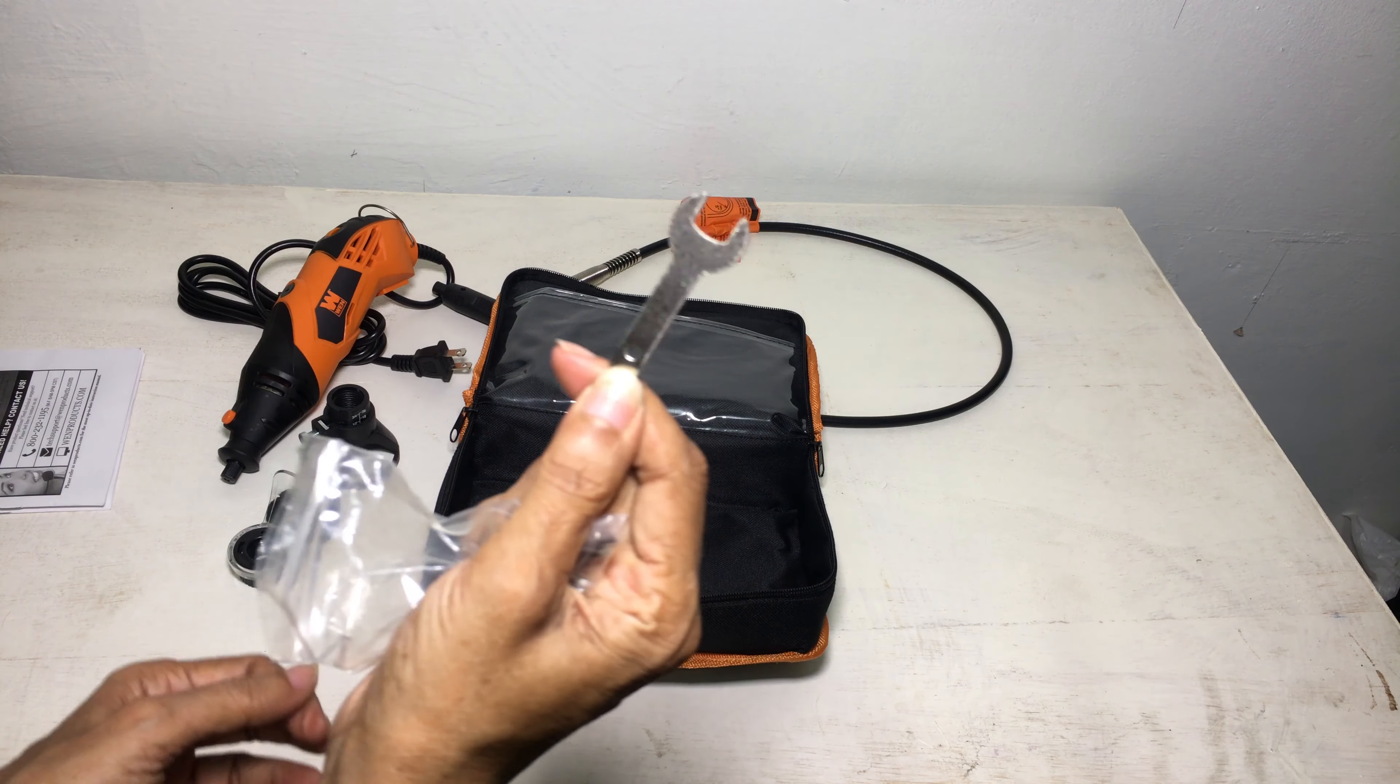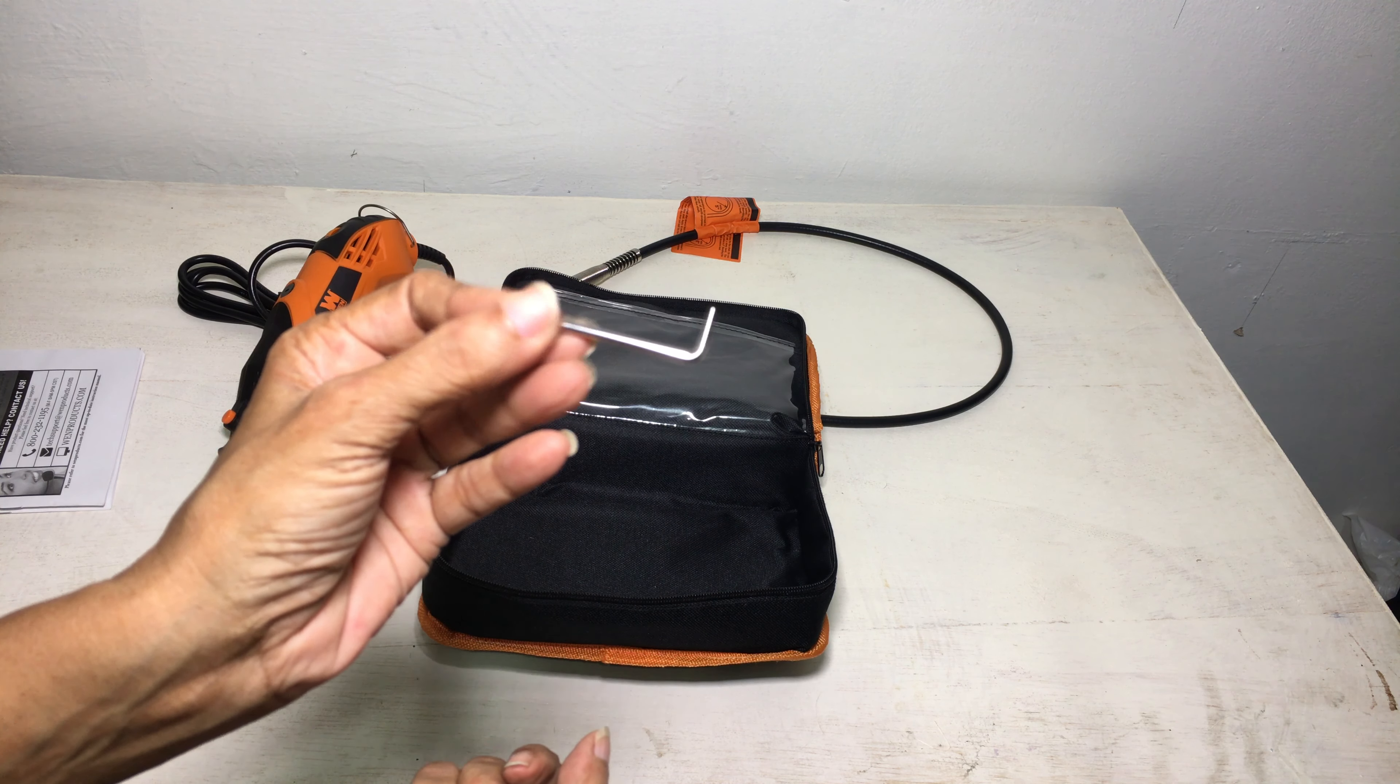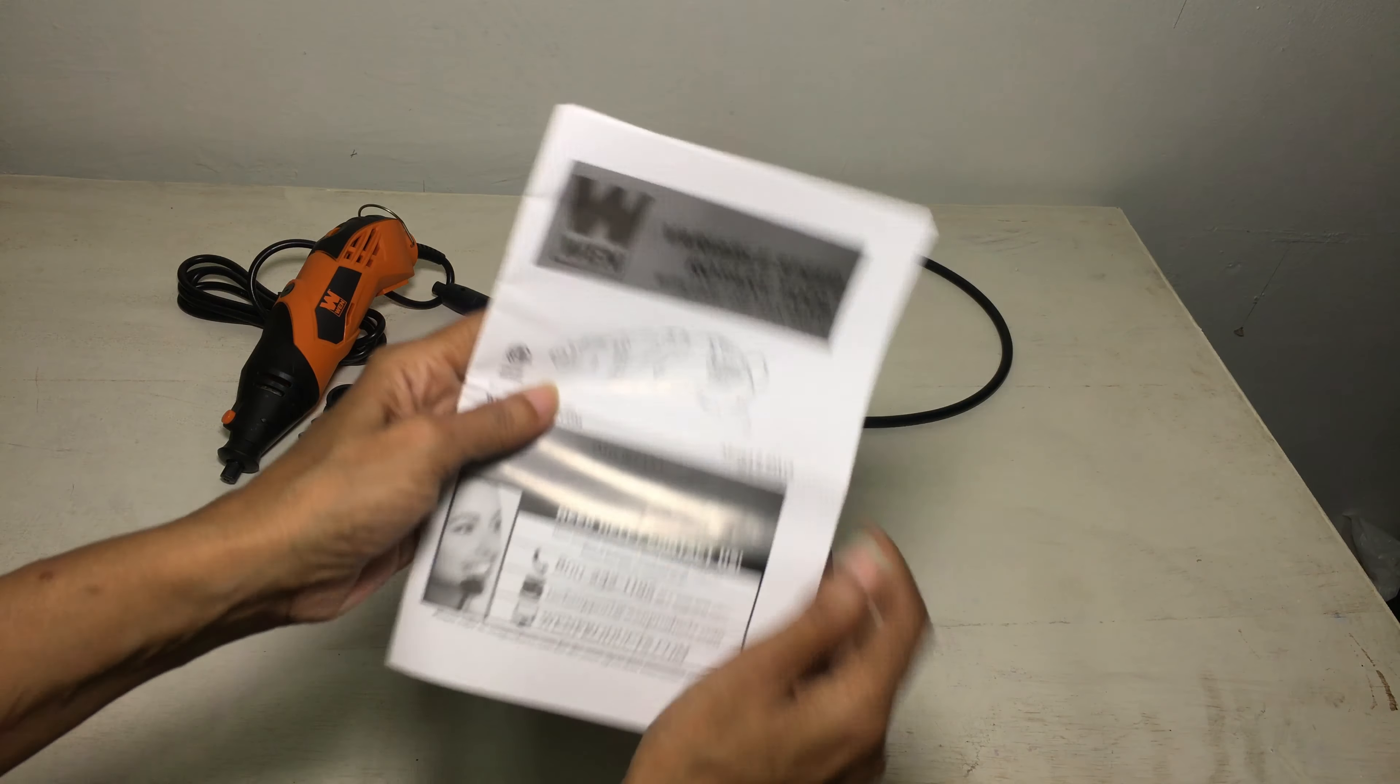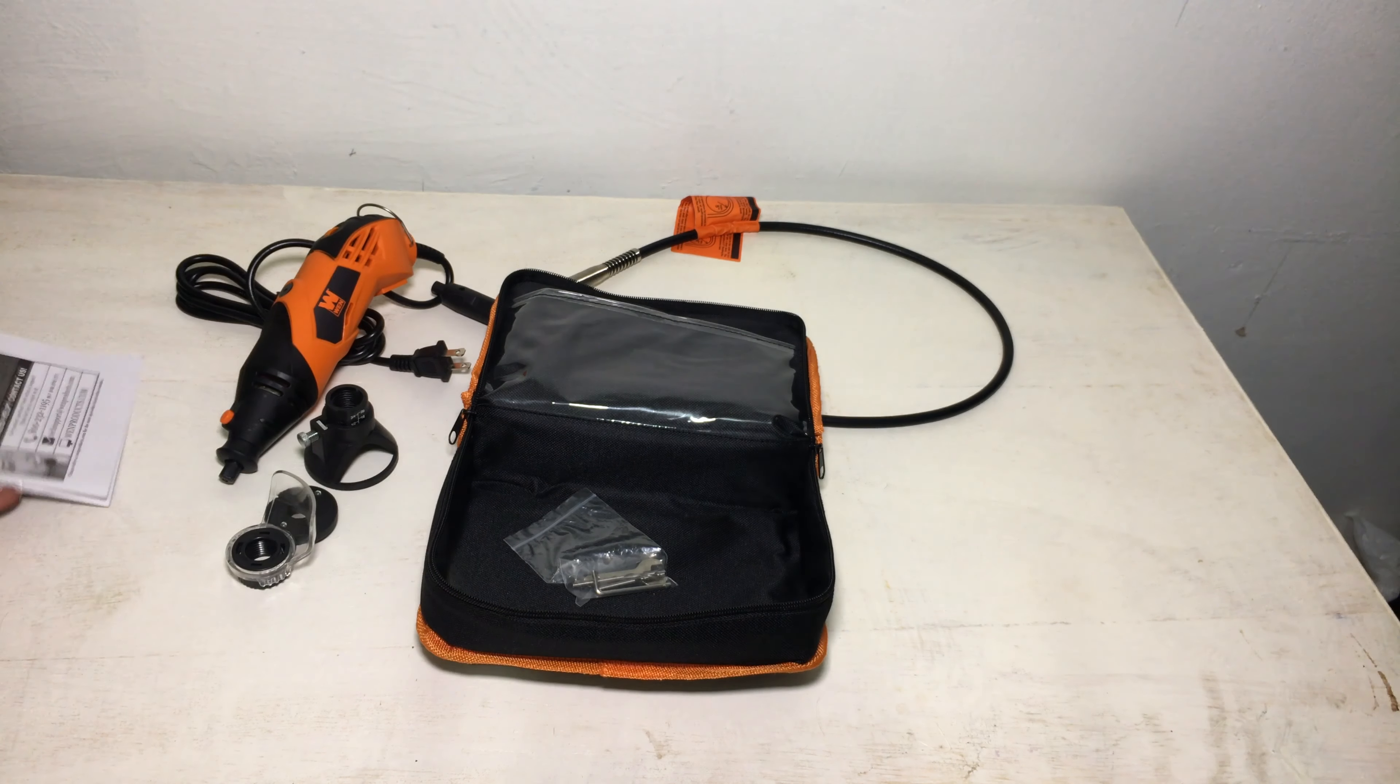The wrench and the allen key supplied are for attaching the accessories to the tool. The manual contains safety tips, a list of the accessories, and installation guide so be sure to read it.